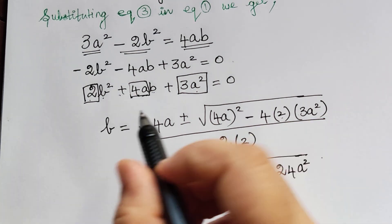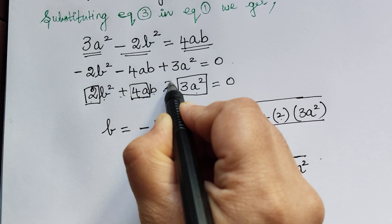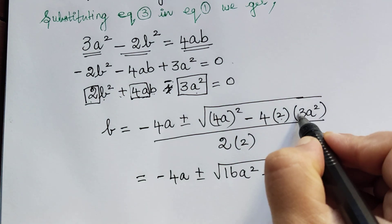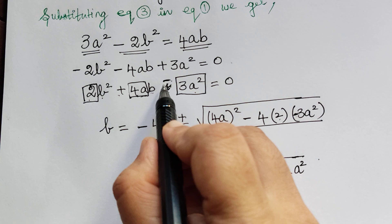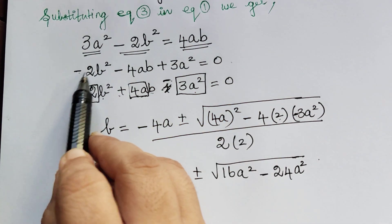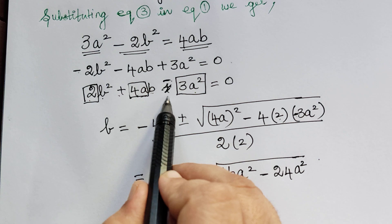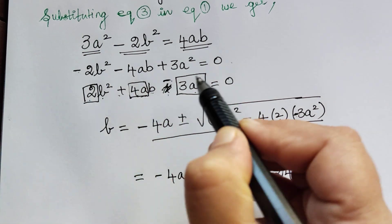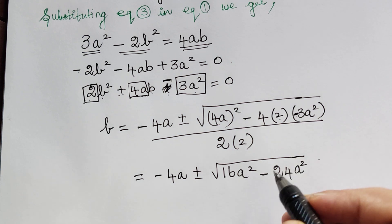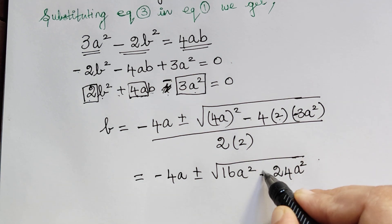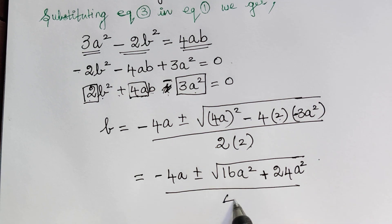Note that when we multiplied by the negative sign, the constant term becomes minus 3a², so we have a negative sign there and minus times minus becomes plus. The whole expression is divided by 4.